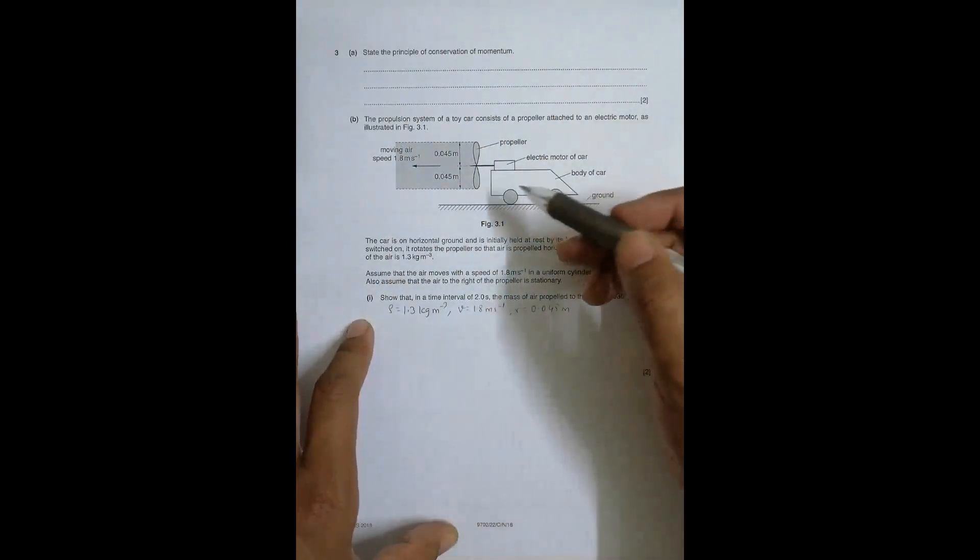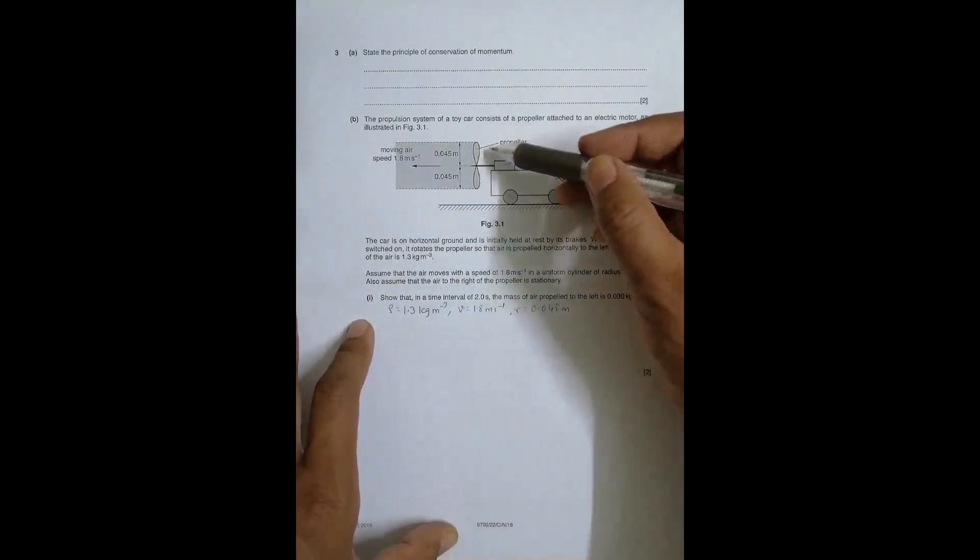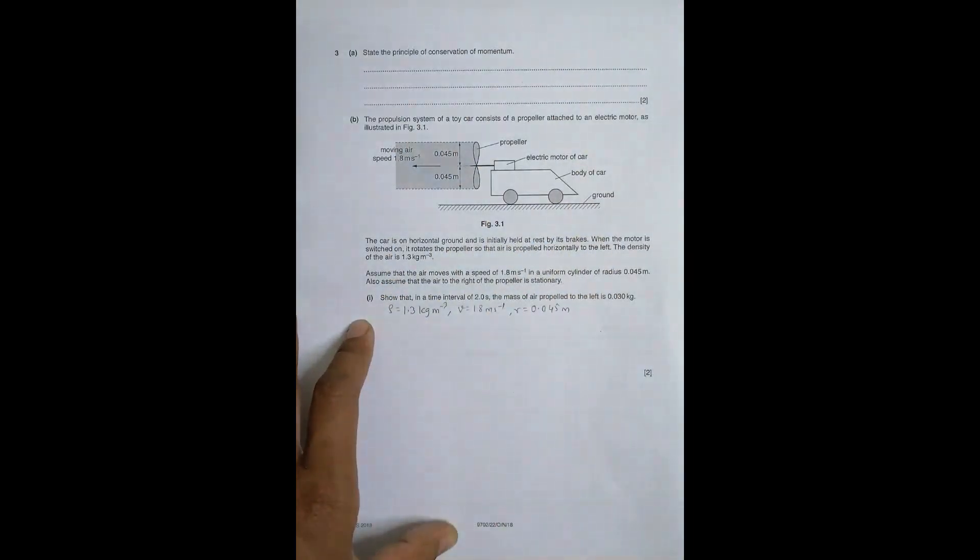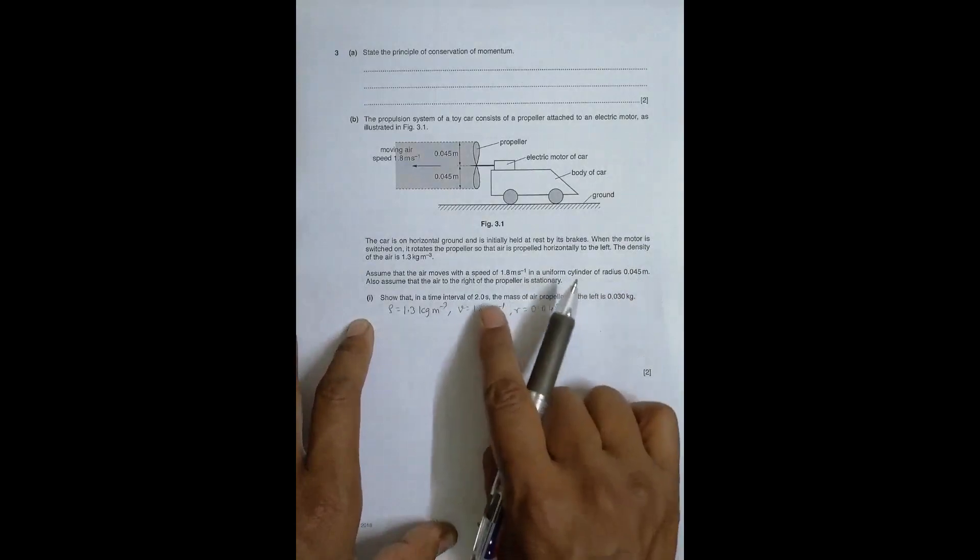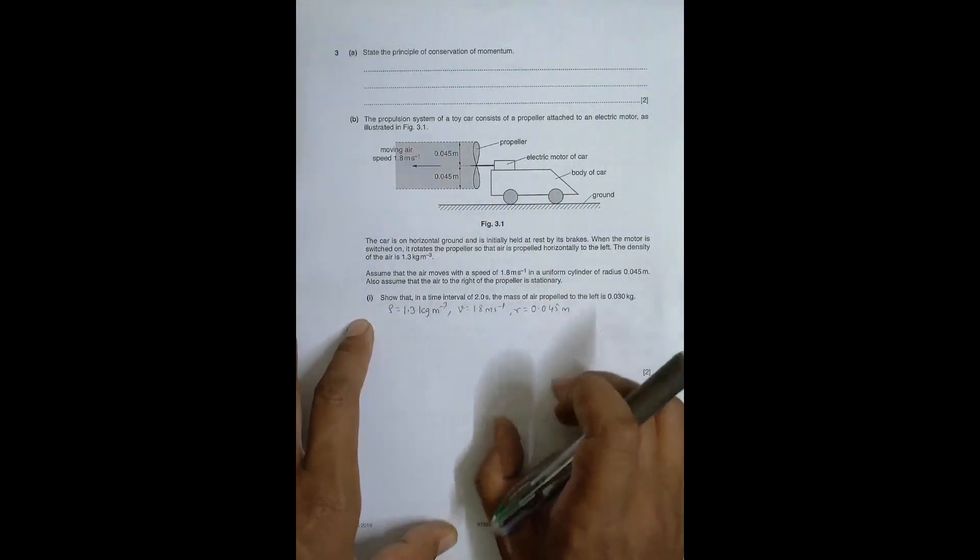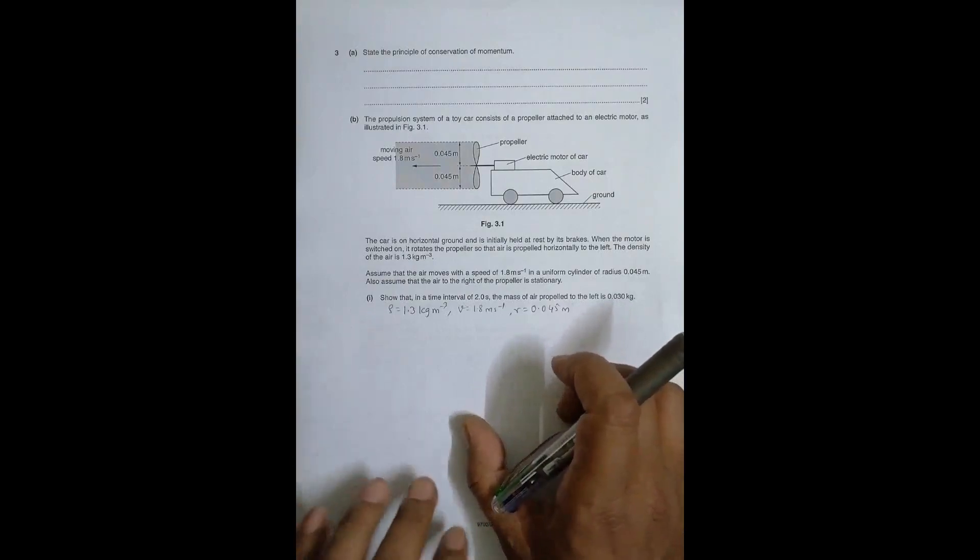Also assume that the air to the right of the propeller is stationary, so the velocity increases from 0 to 1.8 meter per second. So during the calculations the initial velocity will be 0. In a time interval of 2.0 seconds, the mass of air propelled to the left is 0.030 kg.